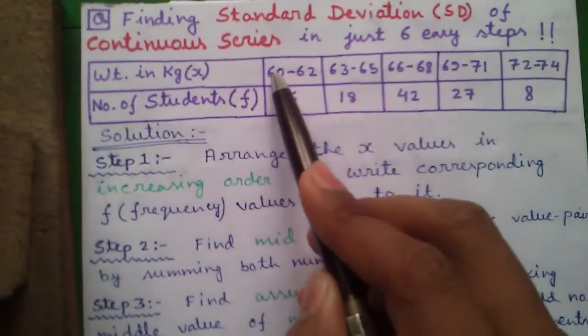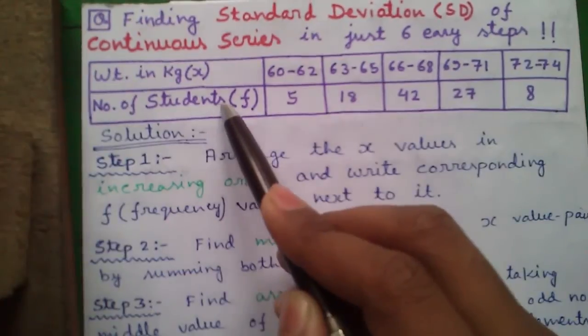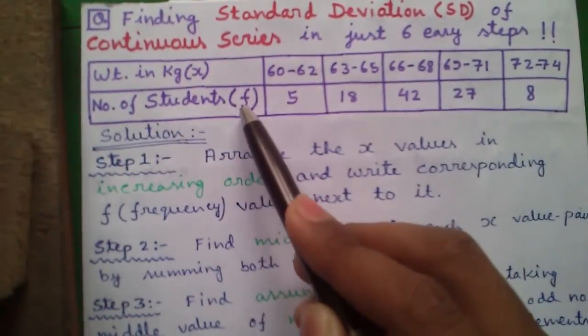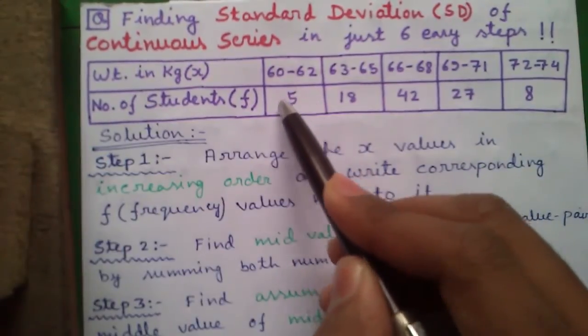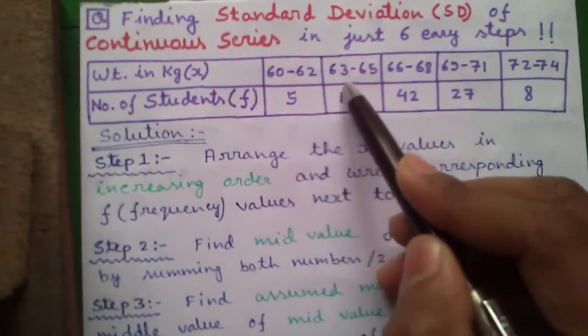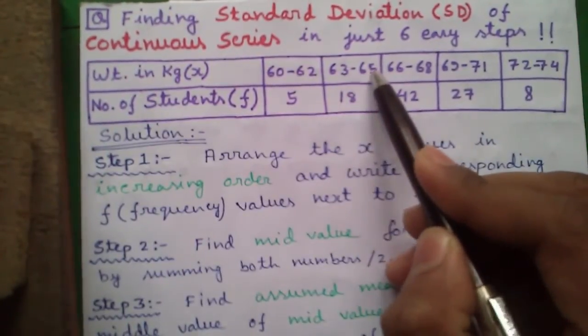Here weights of some students are given denoted by x and number of students having the same weight are given denoted by f, also called frequency. That means 5 students have weight between 60 to 62 and 18 students have weight between 63 to 65 and so on.